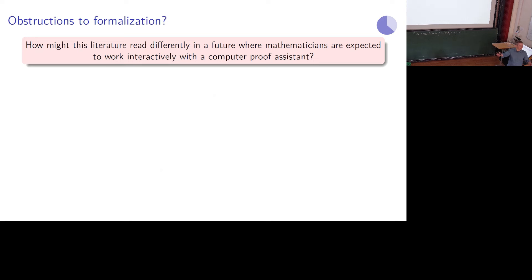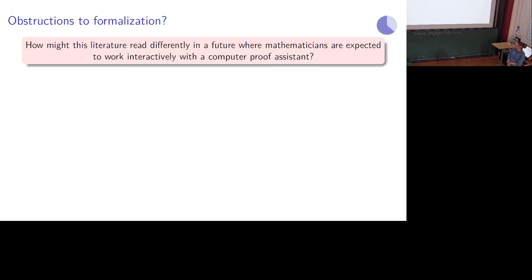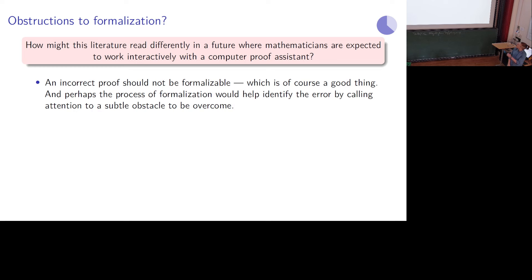So are these obstructions to formalization? What would it look like to try and formalize results like these? How might this literature read differently in a future where mathematicians are expected to work interactively with a computer proof assistant? For the first example — the Kapranov-Voevodsky paper — an incorrect proof of course should not be formalizable. And that's a good thing.